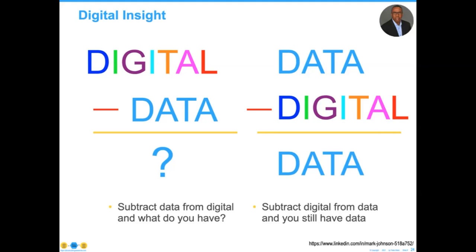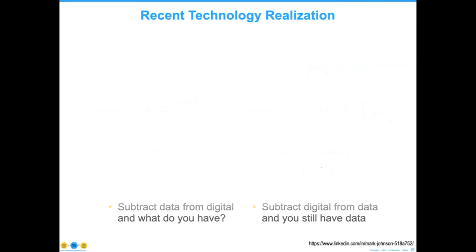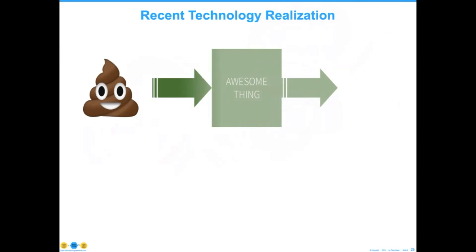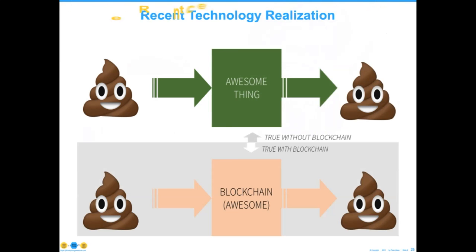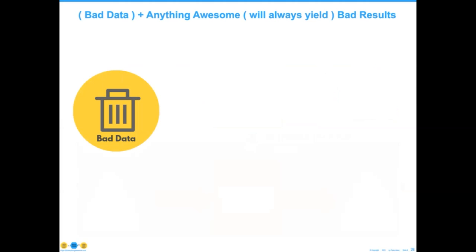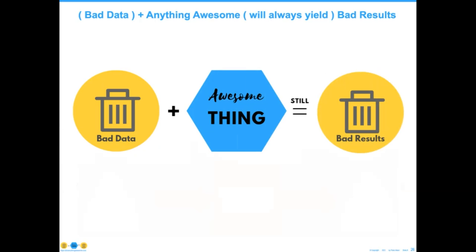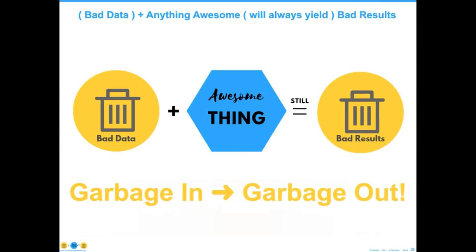The reason for that is very simple: we've been doing a terrible job in colleges and universities for almost 30 years of educating people. Someone posted on LinkedIn that they just had a recent technology realization — if you put chocolate ice cream into anything awesome, it's going to come out chocolate ice cream on the other side. That, of course, is true with blockchain or without blockchain. My own version: bad data plus anything awesome is still bad results. Or, if you're old enough to know it: garbage in, garbage out.